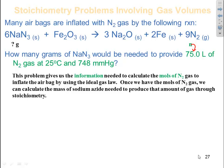The problem gives us the information needed to calculate the moles of nitrogen gas to inflate the airbag by using the ideal gas law. So once we have the moles of the gas, we can calculate the mass of sodium azide needed to produce the amount of gas through stoichiometry. So in essence, I know that my bag has to have 75 liters of nitrogen gas. So through the ideal gas law, I can figure out how many moles of nitrogen gas that is equivalent to. Once I have number of moles of gas through mole to mole, I can figure out how much sodium azide I need to produce that many moles of gas.